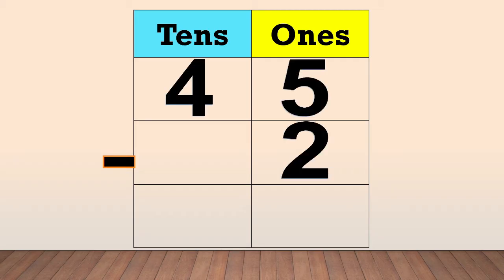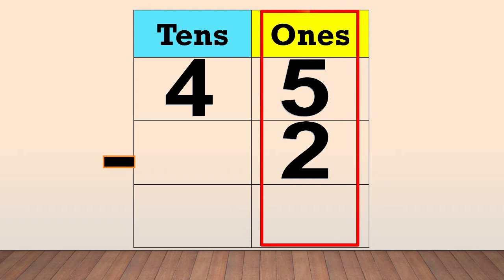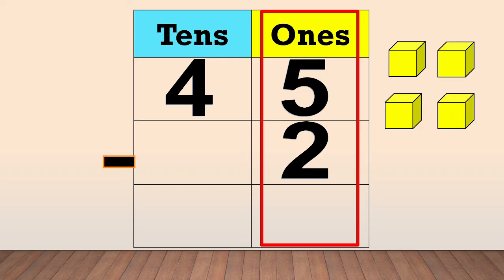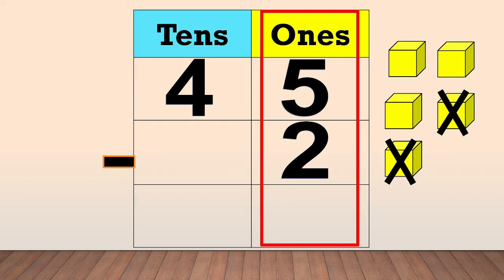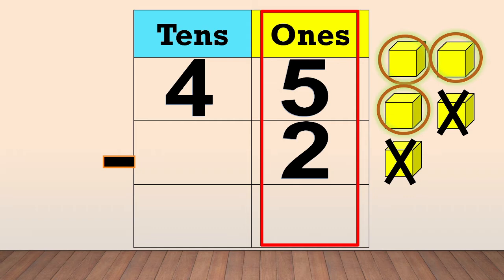Next, subtract the ones: 5 minus 2. We draw 5 boxes equal to the minuend — 1, 2, 3, 4, 5. Then, cross out the boxes equal to the subtrahend: 1, 2. Now, count the remaining boxes: 1, 2, 3. So, the answer is 3.